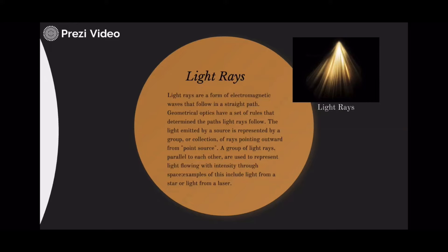A group of light rays parallel to each other are used to represent light flowing with intensity through space. Examples of this include light from a star or light from a laser.